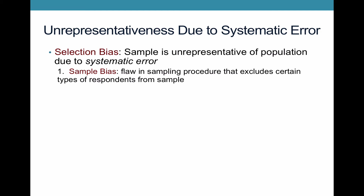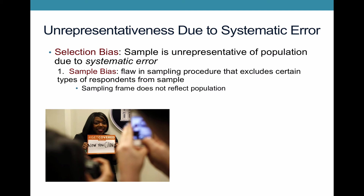Sample bias is where you have a flaw in the sampling procedure, meaning you're excluding certain types of people from the sample. For example, if you're trying to sample American voters for the Obamacare study and you use landlines as your sampling frame, there's a problem: certain voters are a lot less likely to have a landline, namely young people. Young people are much more likely to rely only on cell phones, so you'd be systematically excluding younger people — which is especially problematic if younger people are more likely to support Obamacare.